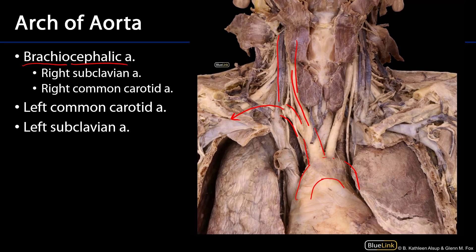The next major branch off of the aortic arch is the left common carotid artery, which will typically have all of the same branches as the right common carotid artery. And then finally the left subclavian artery, which has all of the same branches as the right subclavian artery. So there are right and left subclavian arteries and right and left common carotid arteries. The only difference with the arch of the aorta is that on the right side there is the brachiocephalic trunk.